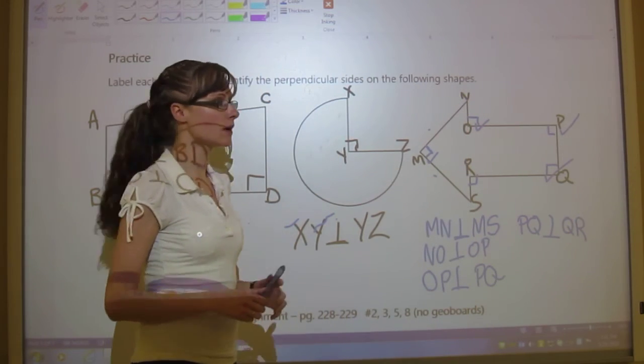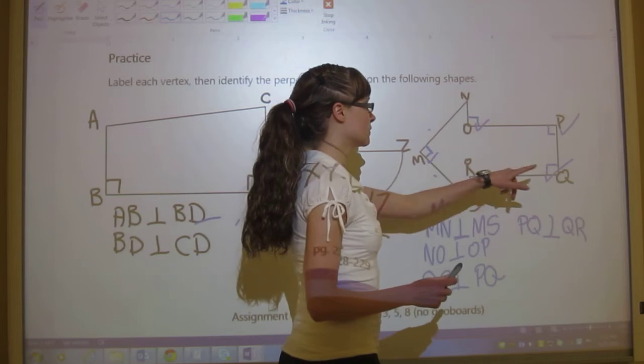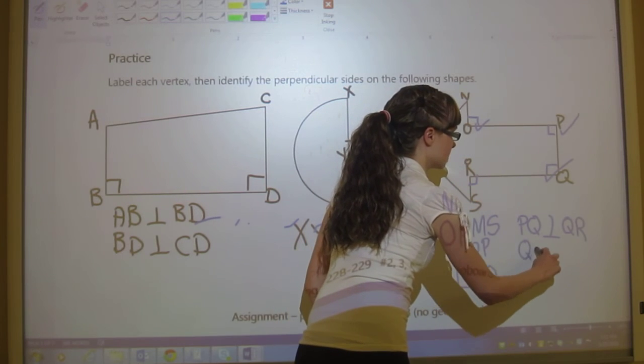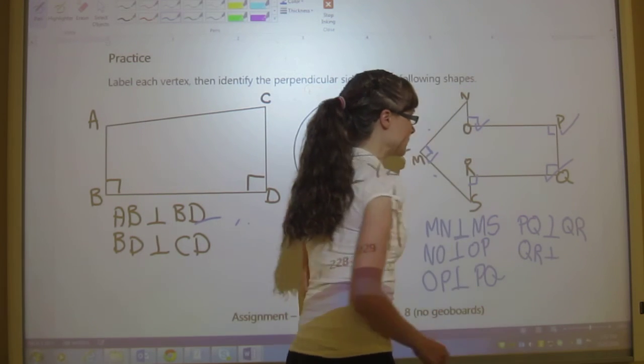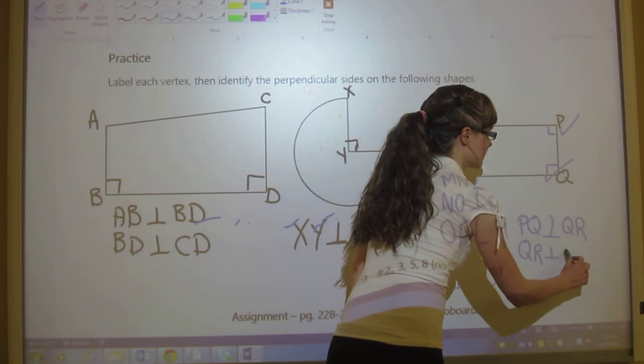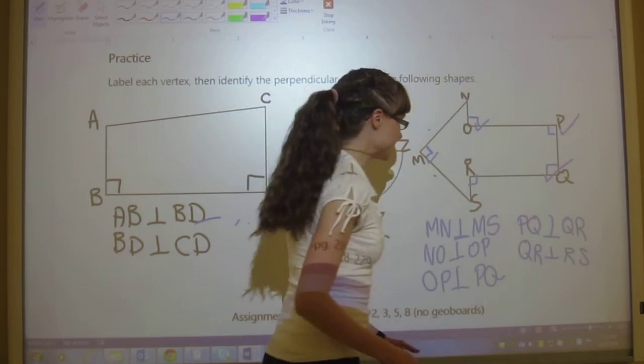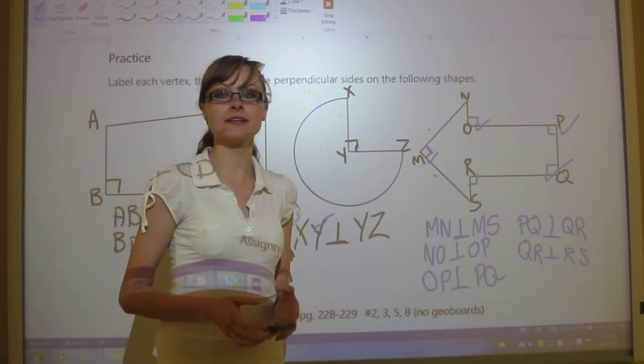And there's one last one here. So QR is perpendicular to RS.